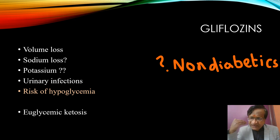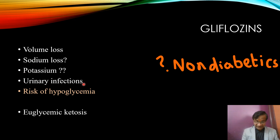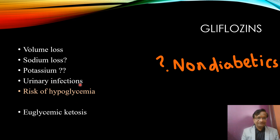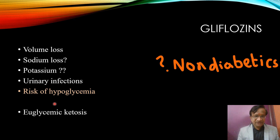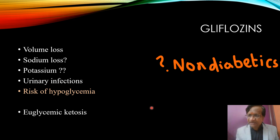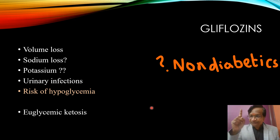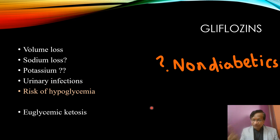Gliflozins are now used even in non-diabetics. Risks include urinary tract infections, sometimes fungal infections, risk of hypovolemia, sodium loss, water loss, and a possible potassium increase (not very clinically significant). Most importantly, they can cause euglycemic ketosis. Examples include Dapagliflozin, Remogliflozin, and others in the Gliflozin class.